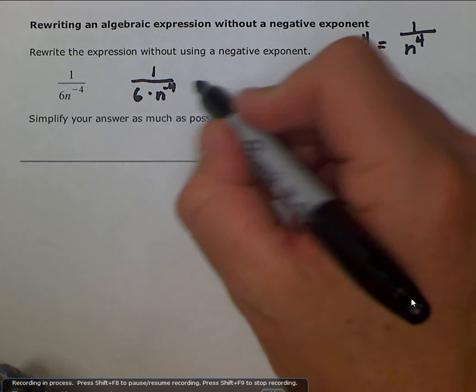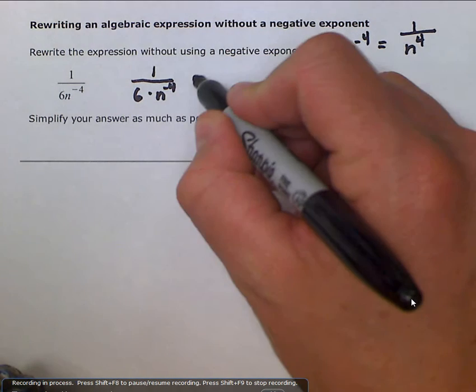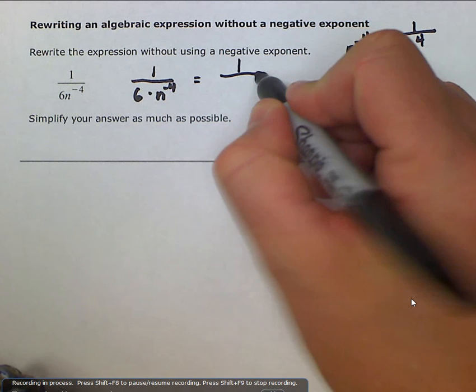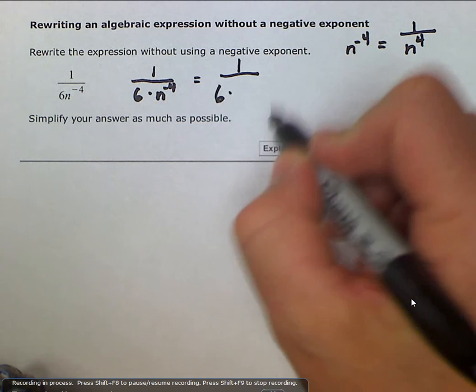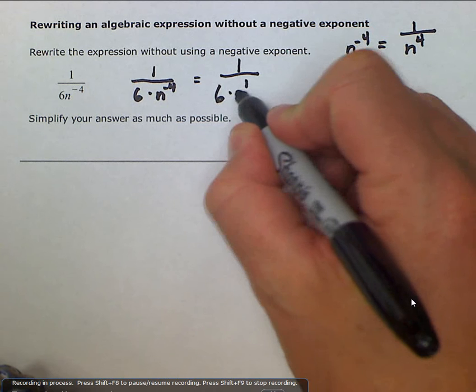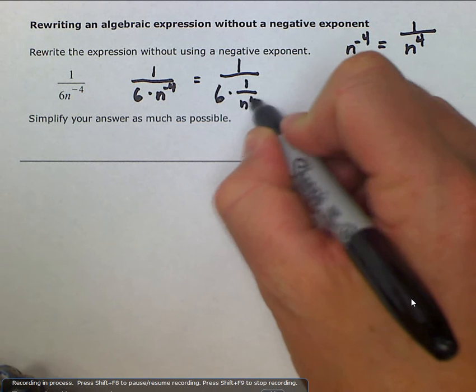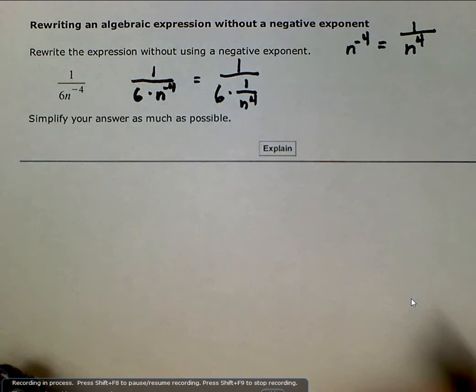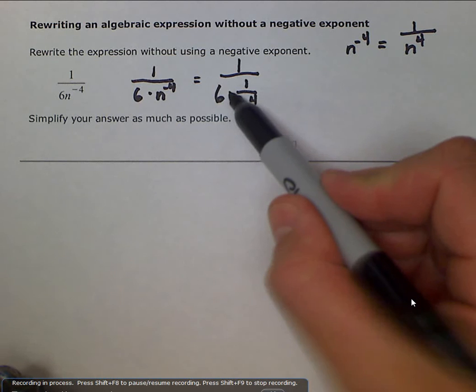So we could rewrite that down here. This is equal to 1 divided by 6 times the fraction 1 over n to the 4th. Well then we can just evaluate this denominator, 6 times this fraction.